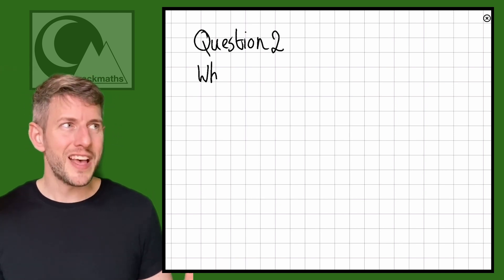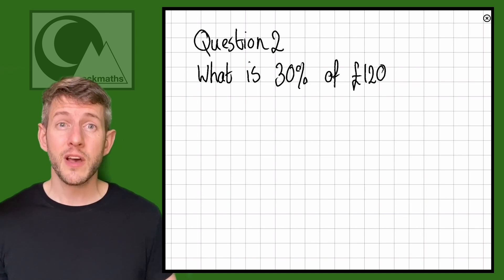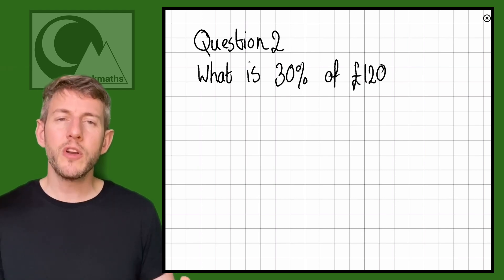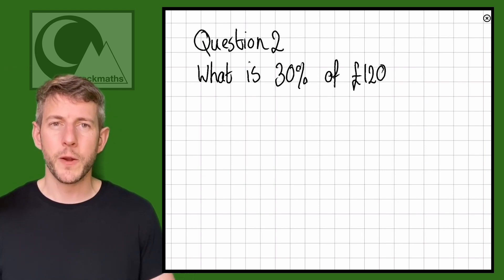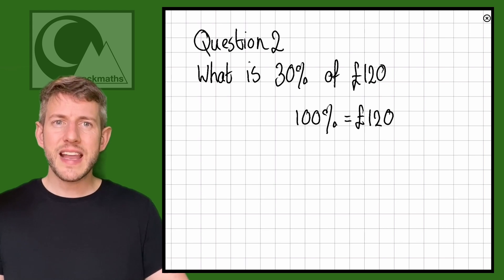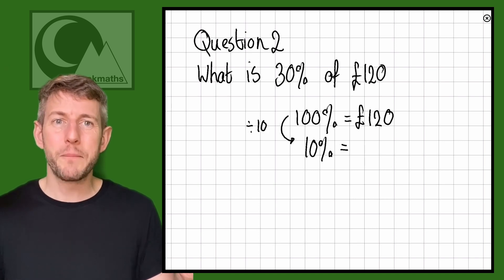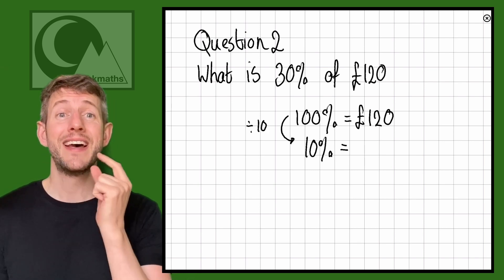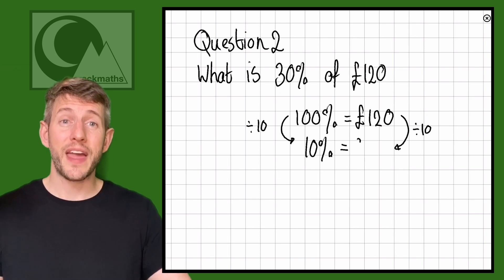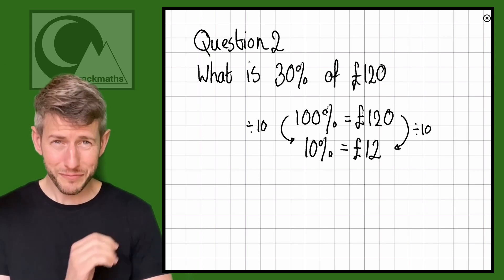Let's try another question: what is 30% of 120? This one's a little trickier because we can't just halve it — we need to go a more roundabout route. We know 100% is £120. Let's go to 10% first. To get from 100% to 10% we divide by 10. So 120 divided by 10 equals £12. We now have 10% is £12, which makes sense because 10 lots of £12 is £120.